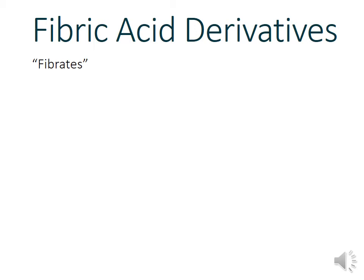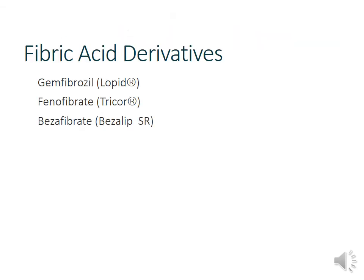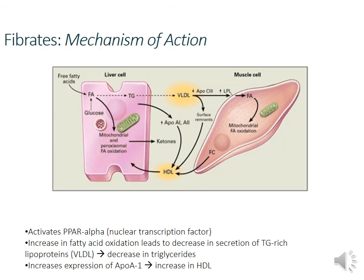Fibric acid derivatives, or fibrates, include gemfibrozil, fenofibrate, and bezafibrate. These work through a different mechanism — activation of the PPAR-alpha nuclear transcription factor. By activating PPAR-alpha, there is increased fatty acid oxidation within the hepatocyte, leading to decreased secretion of triglyceride-rich lipoproteins, mainly VLDL. So fatty acid oxidation increases, less triglycerides are secreted by the hepatocyte, and serum triglycerides decrease. These drugs also increase HDL.